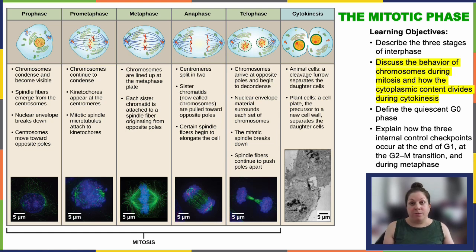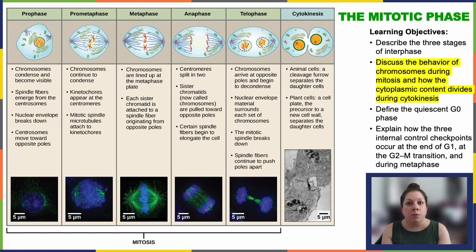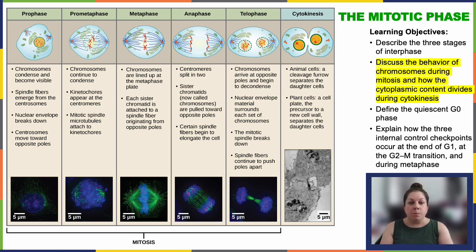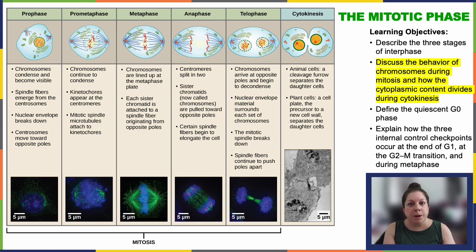Telophase essentially reverses the prior phases' events. The chromosomes have reached the two poles, they start to loosen up and decondense, and nuclear envelopes reform to protect the DNA. It being surrounded by the nuclear envelope is important — not having that protection puts your DNA at risk. Even while outside during cell division, your DNA is briefly exposed to more UV and other factors, so the nuclear envelope reforms quickly.